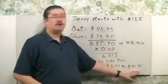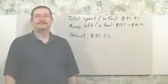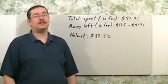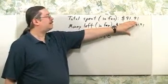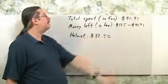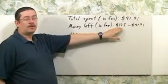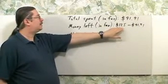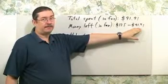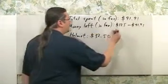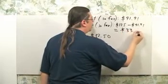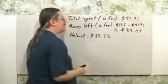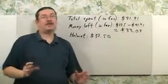Our next step is to figure out how much money he has left. We know that he has so far spent $91.91. He started off with $125. So let's go ahead and subtract the amount we've just figured out. When you do that, you're going to get $33.09.